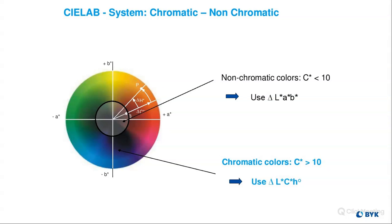With those two sets of values in mind — the LAB values and the LCH values — when is it important to use which one? When you typically have non-chromatic colors with a chroma value less than 10, you want to use LAB values because they match our visual the best. However, as you get more chromatic in color, like a fire engine red, it's best recommended to switch over to LCH. That's also identified as a chroma value greater than 10. I'll show you why with the next coming slides.